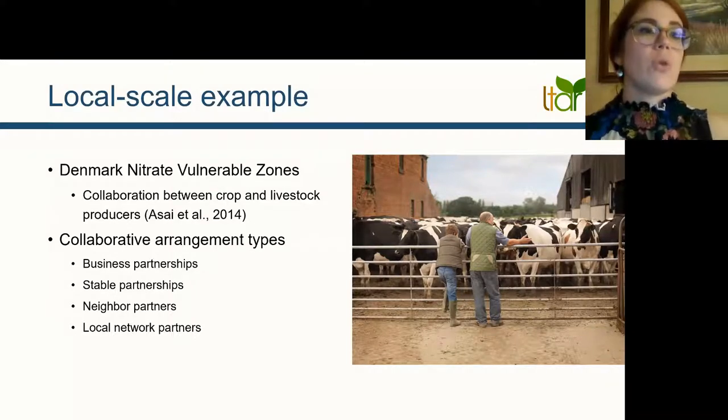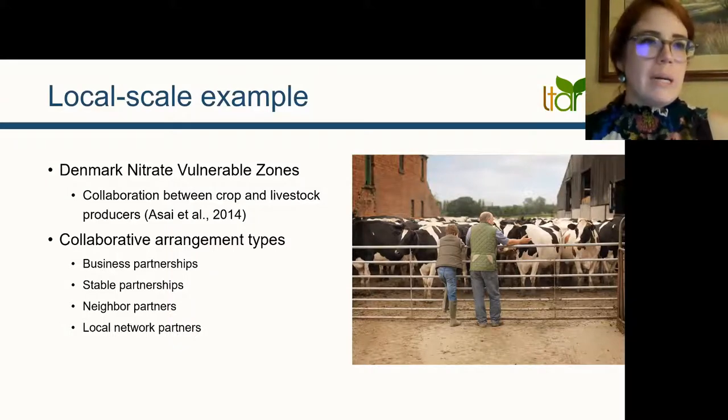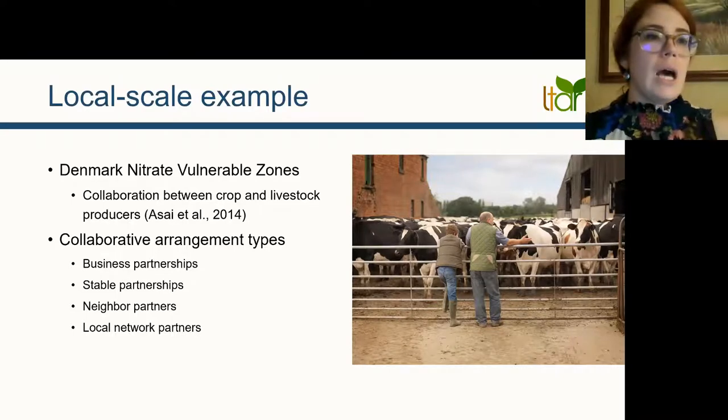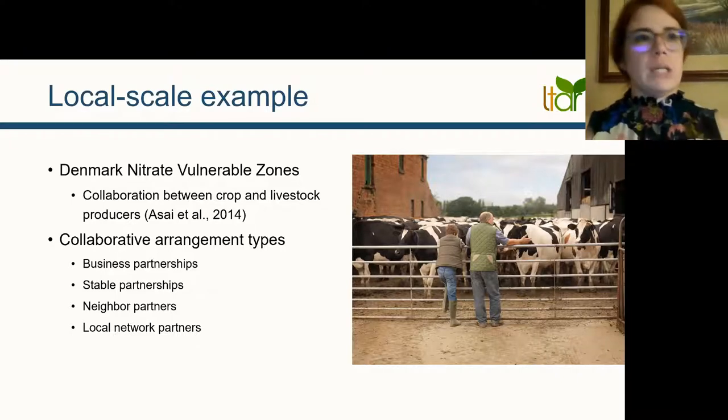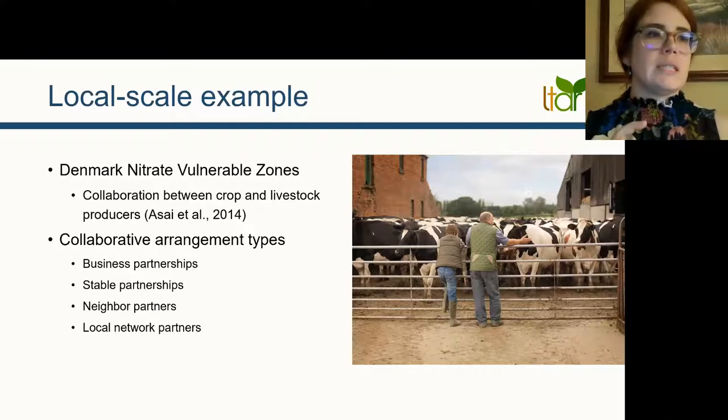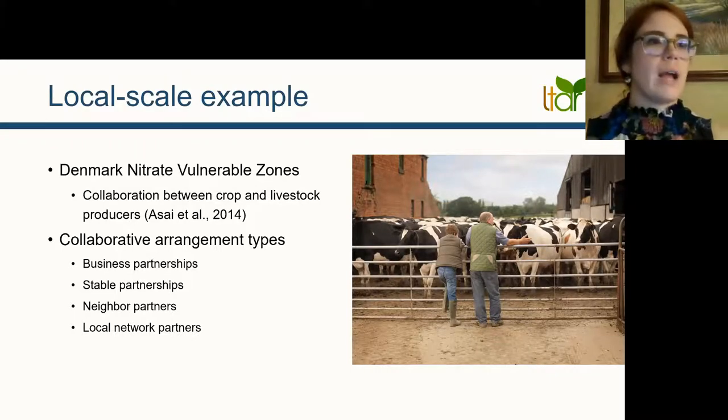In this case, more of a mandatory top-down regulation resulted in collaboration among crop and livestock farmers, although who partners with whom is not mandated. A survey of these collaborative partnerships found four different types of collaborative arrangements: business partnerships, stable partnerships, neighbor partnerships, and local network partners. Business partnerships were mainly formed via professional networks and focus on economics. Communication between partners is more minimal and manure travels longer distances. Stable partnerships refer to close social relationships between partners, mainly via family or close neighbors, with frequent communication and manure traveling shorter distances. Neighbor partnerships are the most common, characterized by relatively infrequent communication but manure traveling shorter distances. Lastly, the local network partnerships are recent relationships with more frequent communication and manure traveling further distances, but not quite as far as business partnerships.